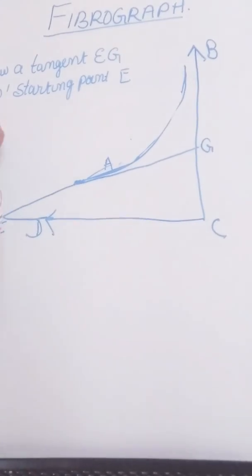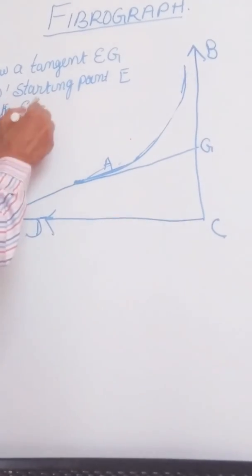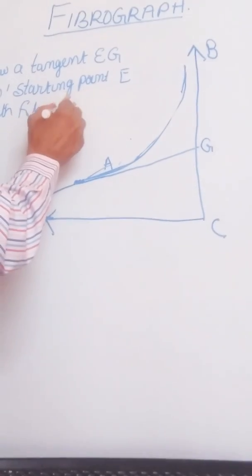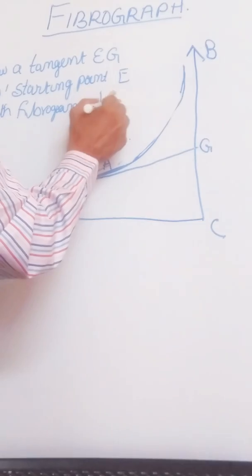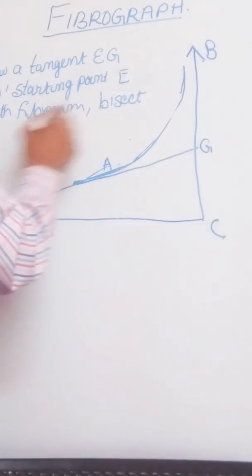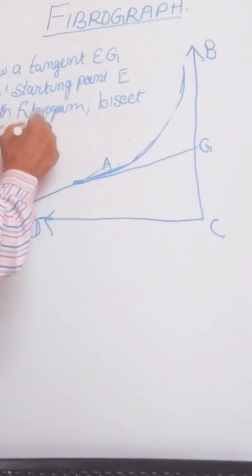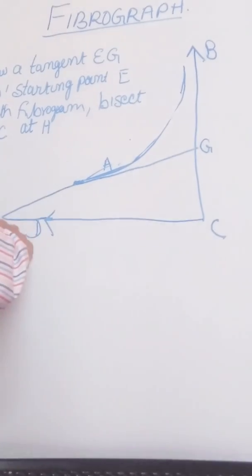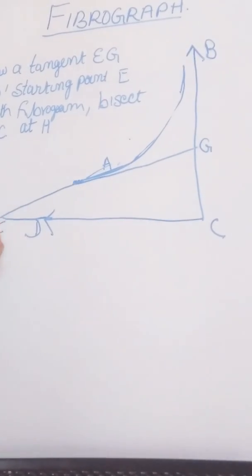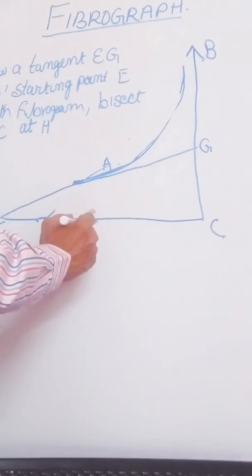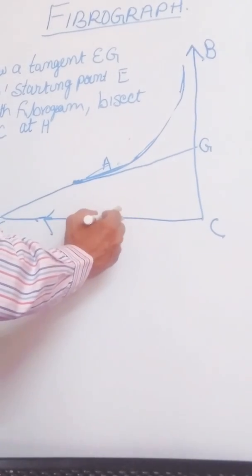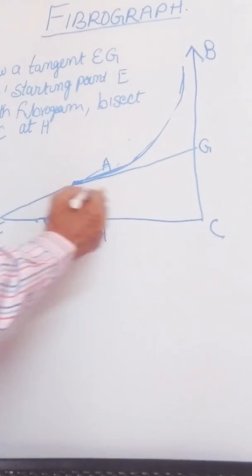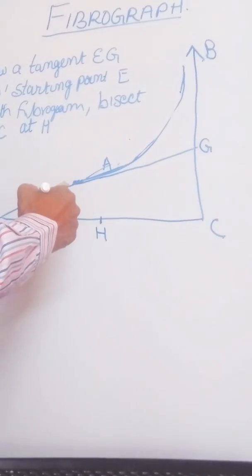Now another step is with fibrogram, bisect PC at H. So this is our EC. I will extend this to this place. It is bisected at H.